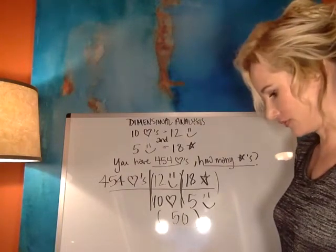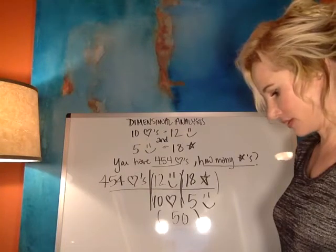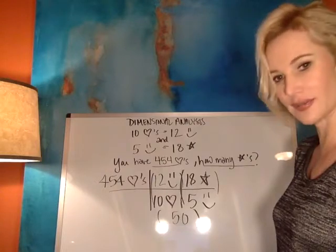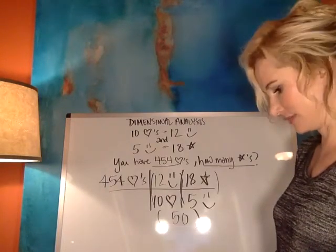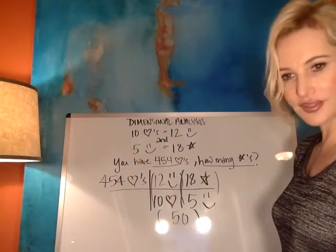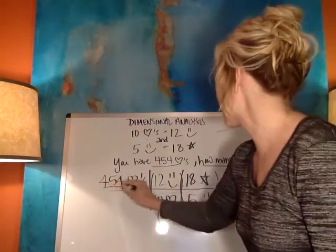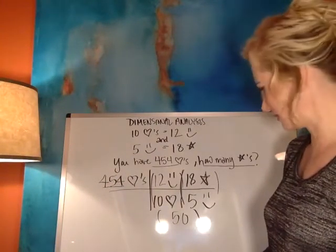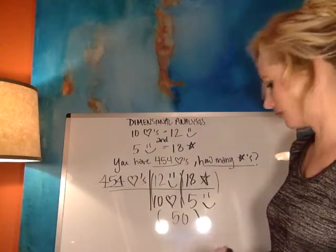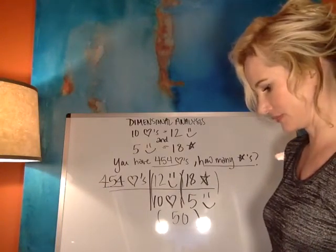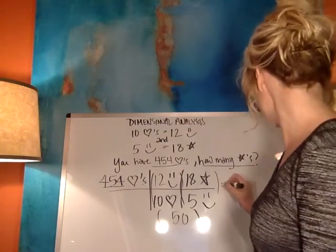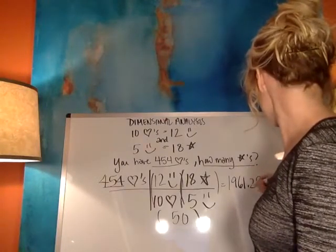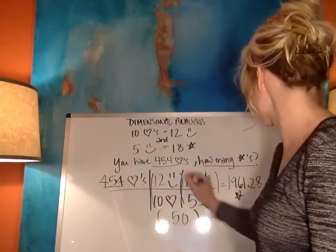I'm going to do 454 times 12, and that gives me 5,448. Then I'm going to take that times 18, and that gives me 98,064. But I started with 3 sig figs, so I need to end with 3 sig figs. I also need to divide by the bottom, so I can divide by 10 and then by 5 — or just divide by 50, same thing. And I get, for my answer, 1,961.28. My unit would be stars because my smiley faces cancel out.